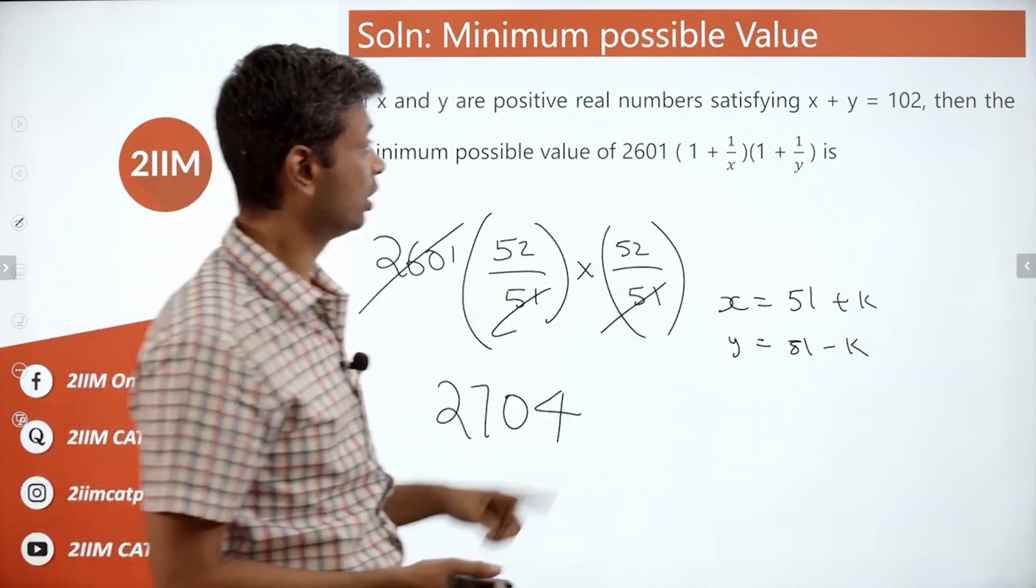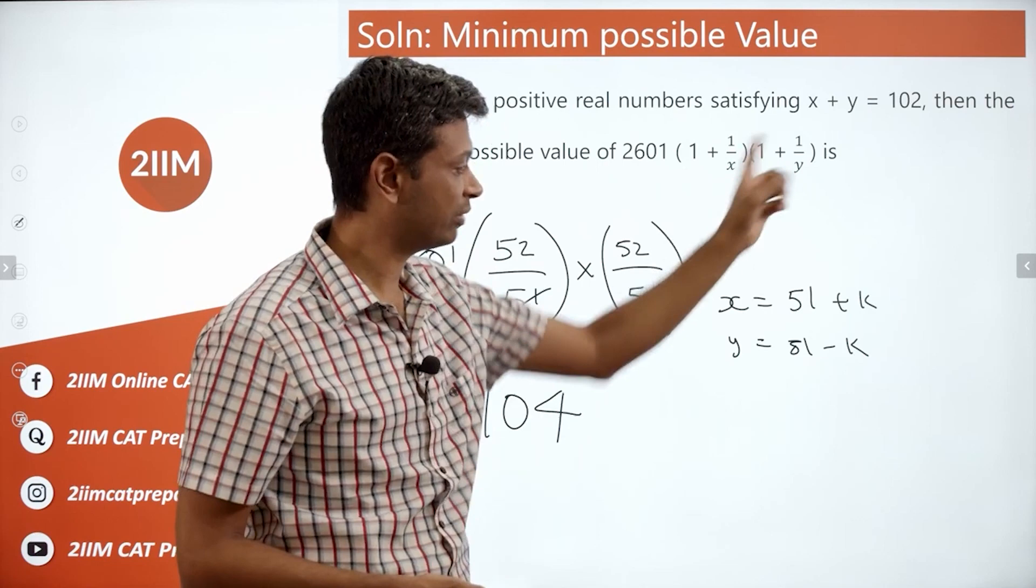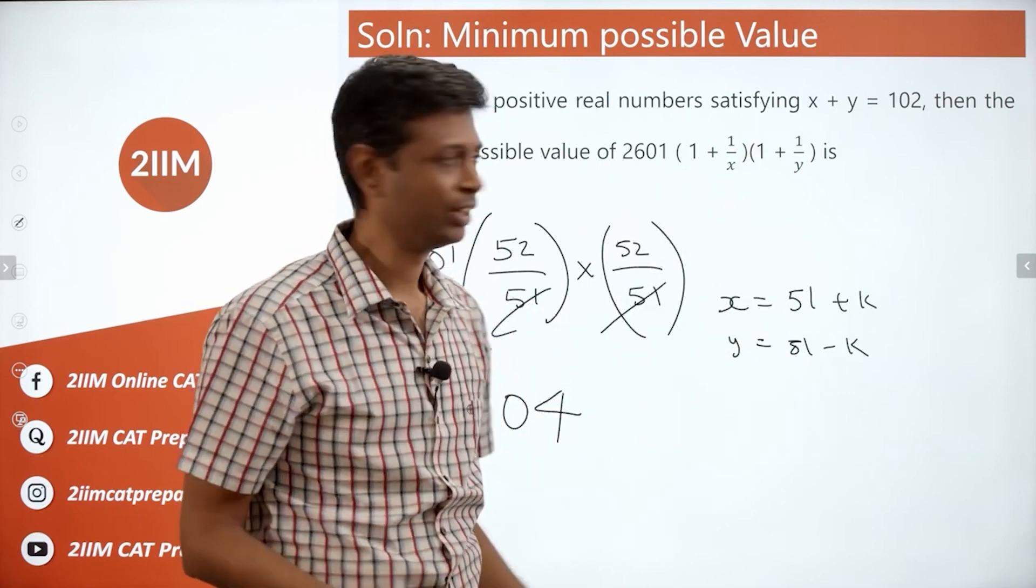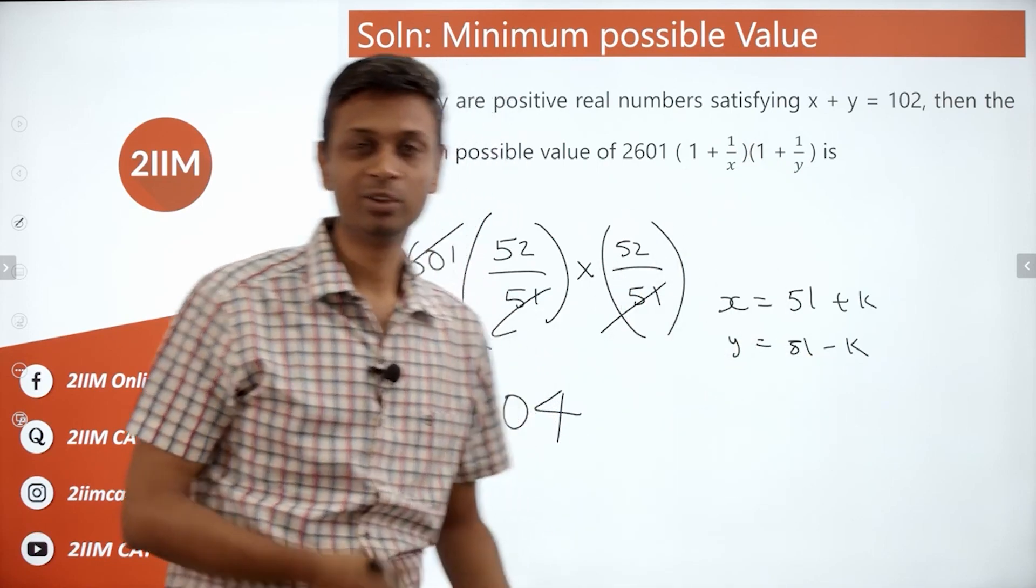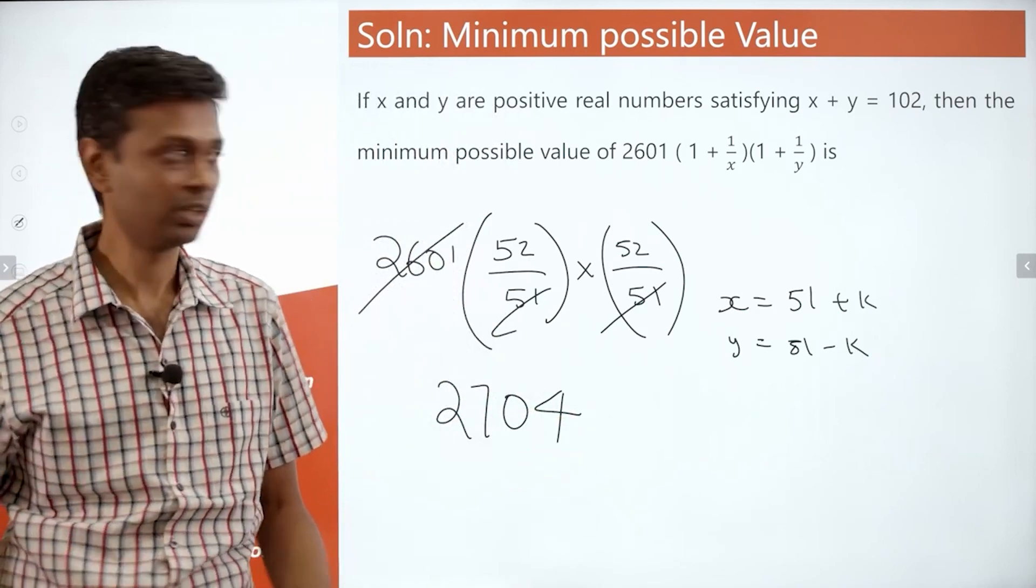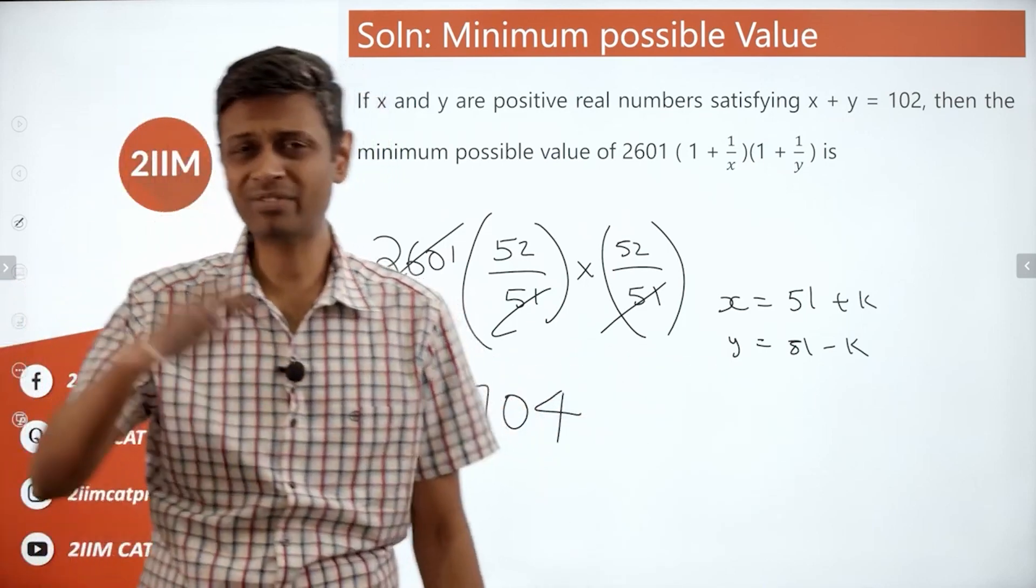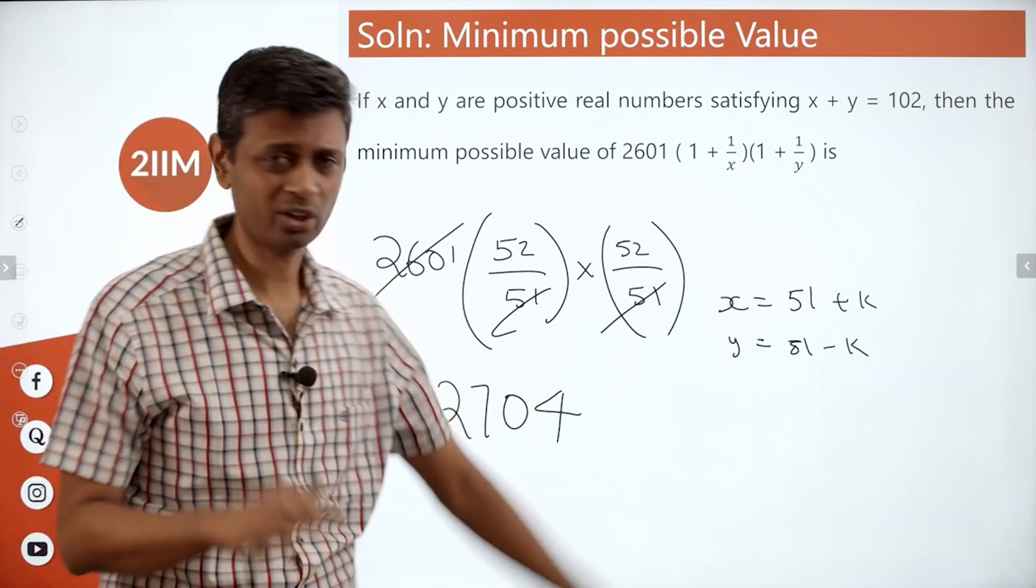So you can say 2601 into (1 + 1/(51+k)) into (1 + 1/(51-k)) and simplify. You'll get an expression in terms of k. You have a look at it, you'll be able to find where it goes to maximum, where it goes to minimum, then you're good to go. The textbook method works like this. You won't have to differentiate or anything. You can still find the answer. It's not rocket science.